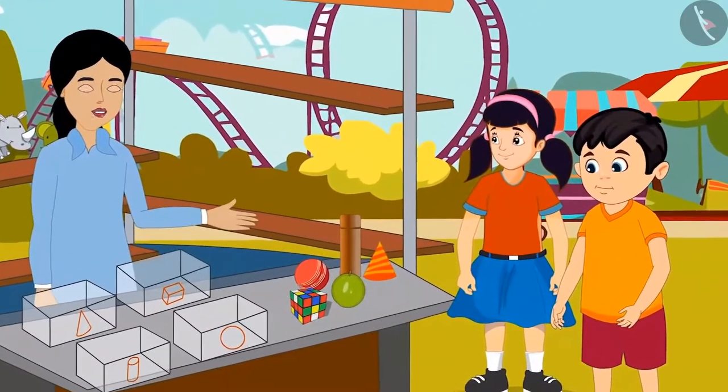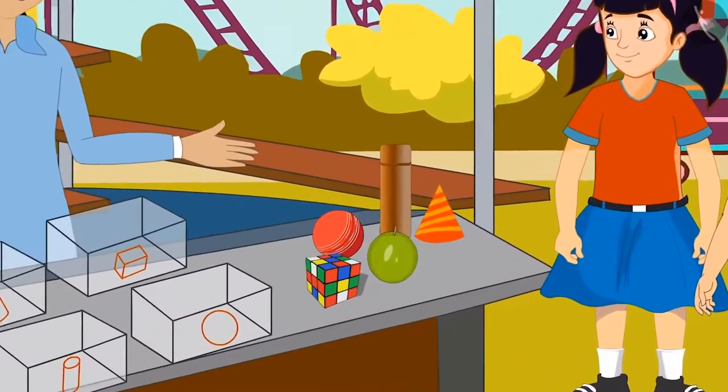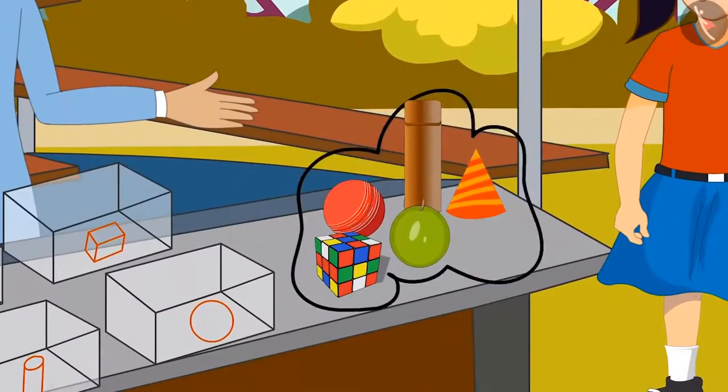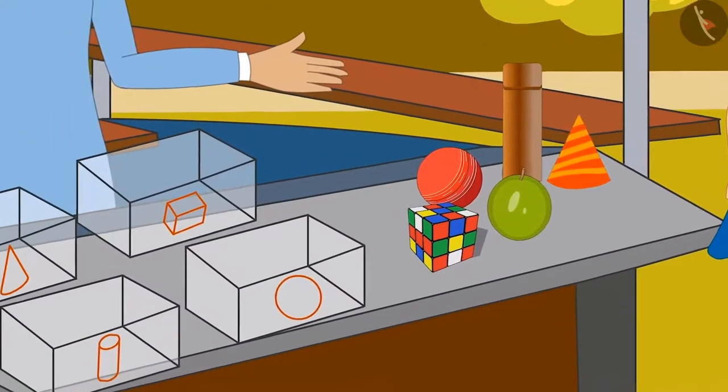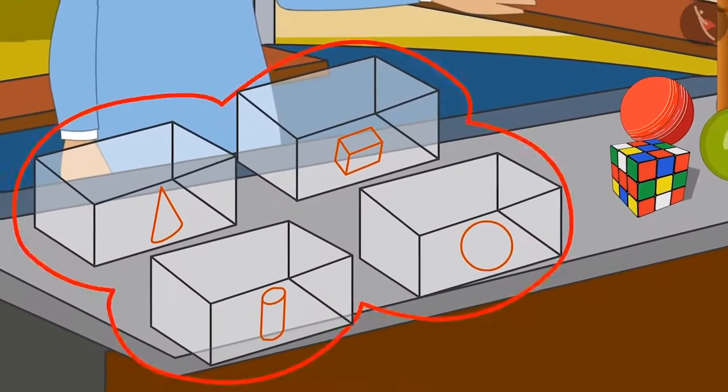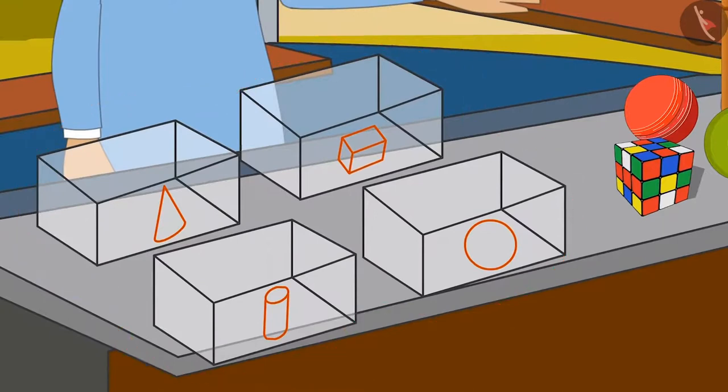In this game, you have to sort all the items placed on the table one by one by identifying their shape and place them in four different boxes. In the first box, round ball-like objects. In the second box, box-like objects. In the third box, cylinder-like objects. And in the fourth box, ice cream cone-like objects.